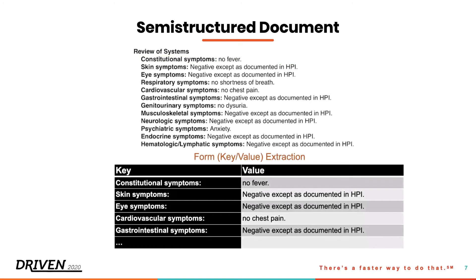A more common approach for semi-structured documents is the use of a form or key-value data extractor. This extractor uses a machine learning model trained to recognize the relationship between keys and values within a text document. They work well and are easy to configure, but they're not foolproof — they sometimes miss data elements. There are also extractors called table extractors, which are similar to form extractors but pull data out of tables. A good example would be items on an invoice. These extractors are based on machine learning models trained on tabular data rather than key-value pairs.